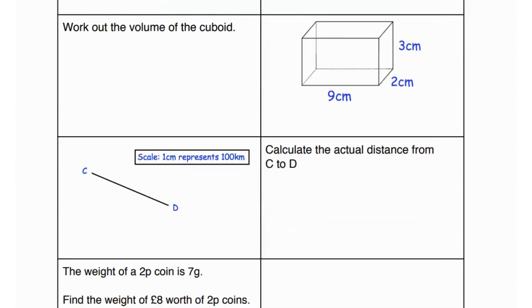Next question says work out the volume of the cuboid. Volume of a cuboid has a formula of length times width times height. 3 is your height, 9 is your length, and 2 is your width. So that's 9 times 2 times 3, which is 54 centimeter cube. Always remember that the units for volume are cube, for area it's square, and for perimeter it's just centimeter or meter or whatever the length is.